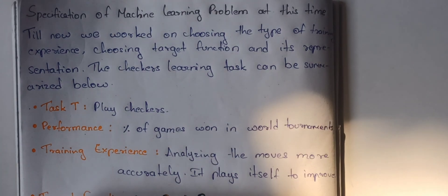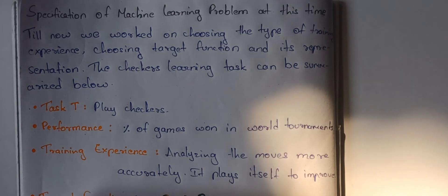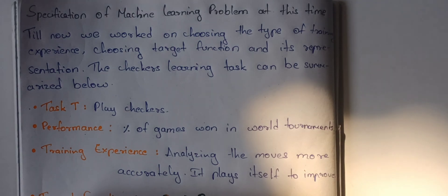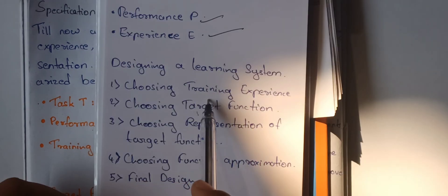Training experience involves analyzing the moves more accurately. Next time we have to play this game, we will decide what move is needed. The machine also plays itself to improve. So now the experience happens. Next: designing a learning system — we will complete three steps. The first step is choosing training experience.